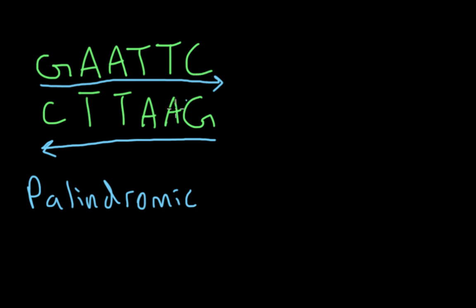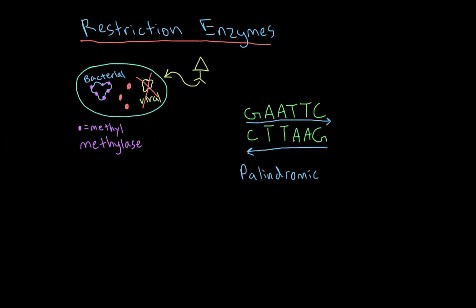A palindromic sequence is exactly what restriction enzymes recognize. For example, an enzyme called EcoR1 recognizes this palindromic sequence. As EcoR1 floats around the bacterial cell, it recognizes the sequence — if it's methylated, it won't touch it, but if it's unmethylated, as in viral DNA, it will cleave it. It cuts the DNA right at that site.